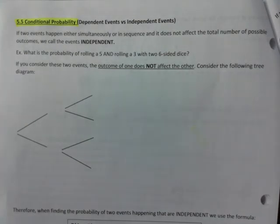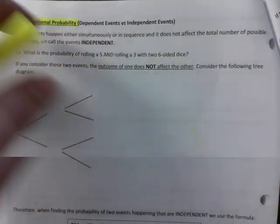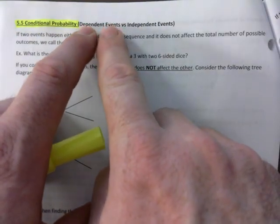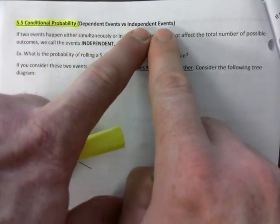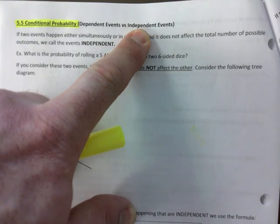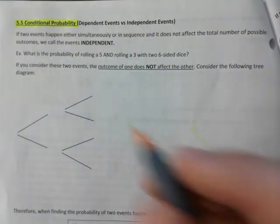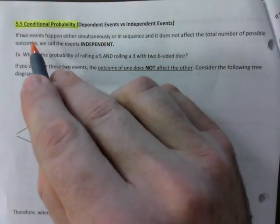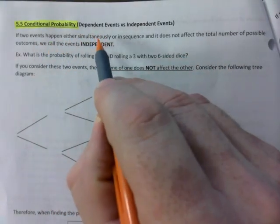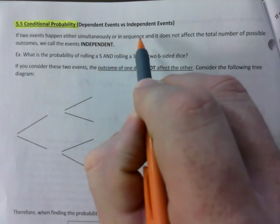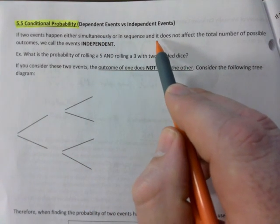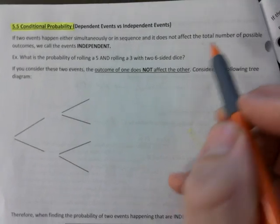It's called conditional probability, and the main idea is we're going to look at dependent events versus independent events. You need to make sure you follow here. If two events happen either simultaneously or in sequence and it does not affect the total number of possible outcomes...